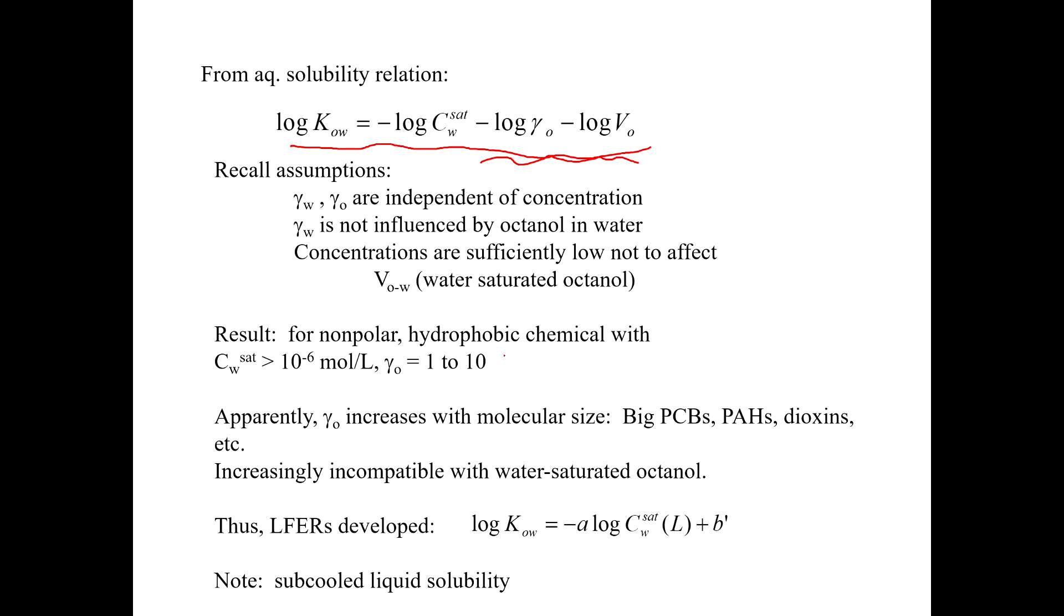And so we can start to develop these types of linear free energy relationships where log KOW is a linear function of the solubility in water. And again, the big L means here that it's the hypothetical liquid solubility. Even if your compound is a solid or a gas at that temperature, we're going to use their hypothetical liquid solubility. That's the only way these types of linear free energy relationships work. And so you just have coefficients here, a slope term, and an intercept here that can help you describe what's going on.